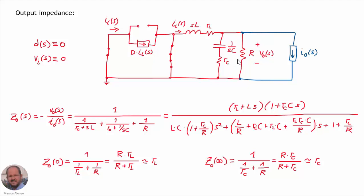We can see that the output impedance is just the equivalent impedance of the inductor impedance in parallel with others. This is the final expression, and we can operate on it to get another expression in which we have polynomials at the numerator and at the denominator. The output impedance is at the end the equivalent impedance of all three impedances, which makes this type of modeling very easy to understand.